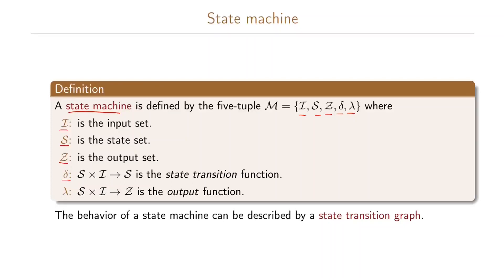We have two functions. The function delta is a mapping from the states and the inputs to the next state. Lambda is a mapping from the state set and the input set to an output set, called the output function.